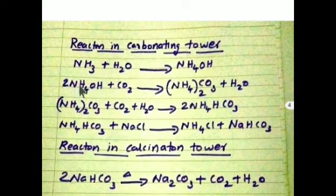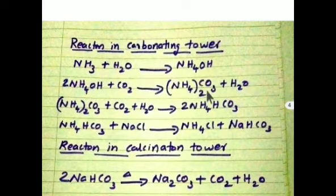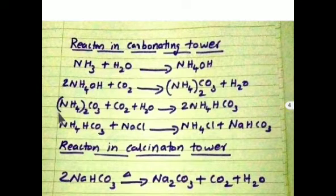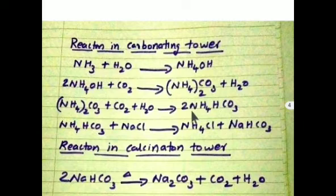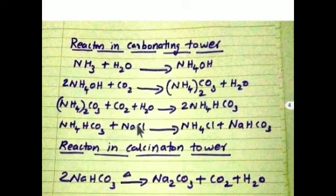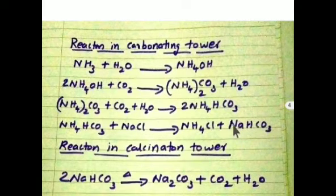Next, ammonium hydroxide plus carbon dioxide gives ammonium carbonate (NH₄)₂CO₃ plus water. Then ammonium carbonate reacts with more carbon dioxide and water to give ammonium bicarbonate (2 NH₄HCO₃). This ammonium bicarbonate then reacts with sodium chloride to give ammonium chloride (NH₄Cl) and sodium bicarbonate (NaHCO₃).